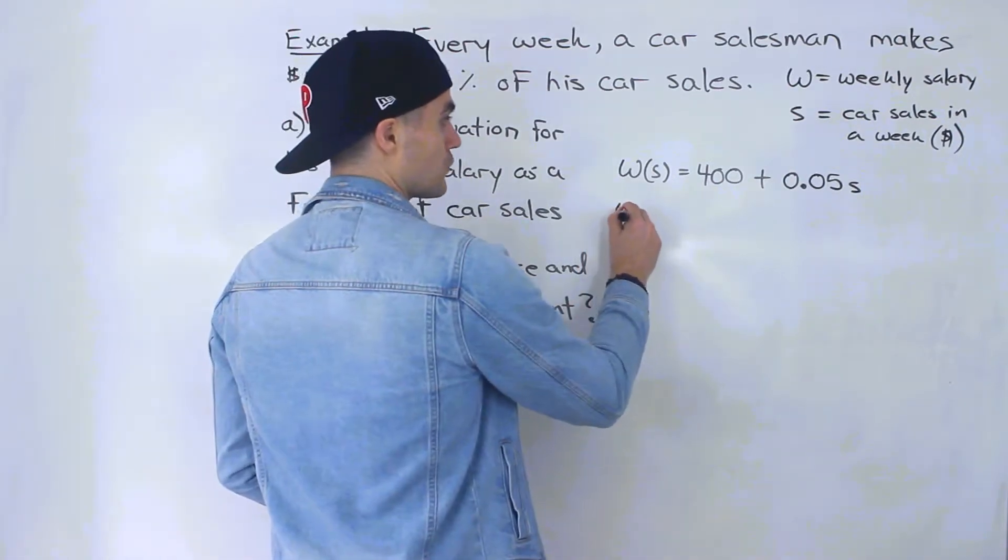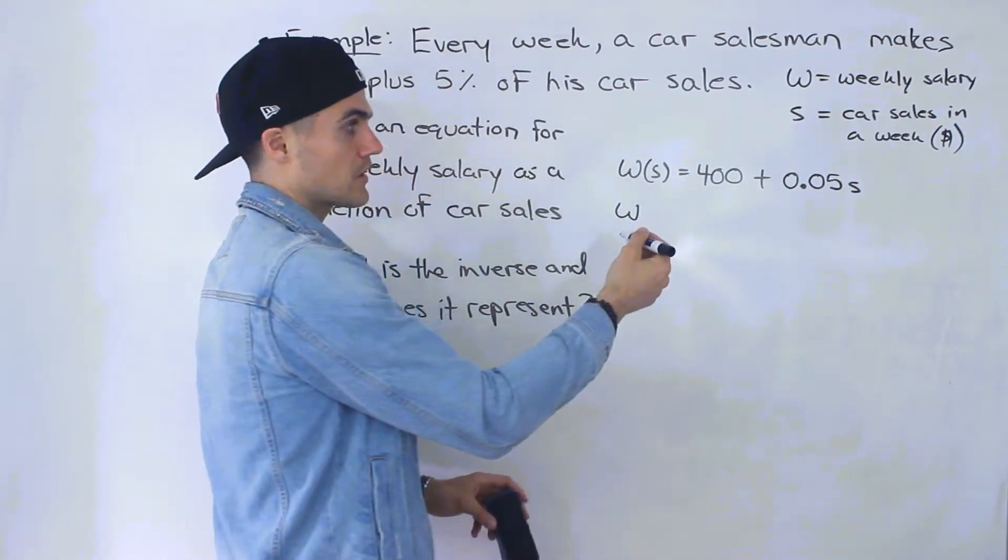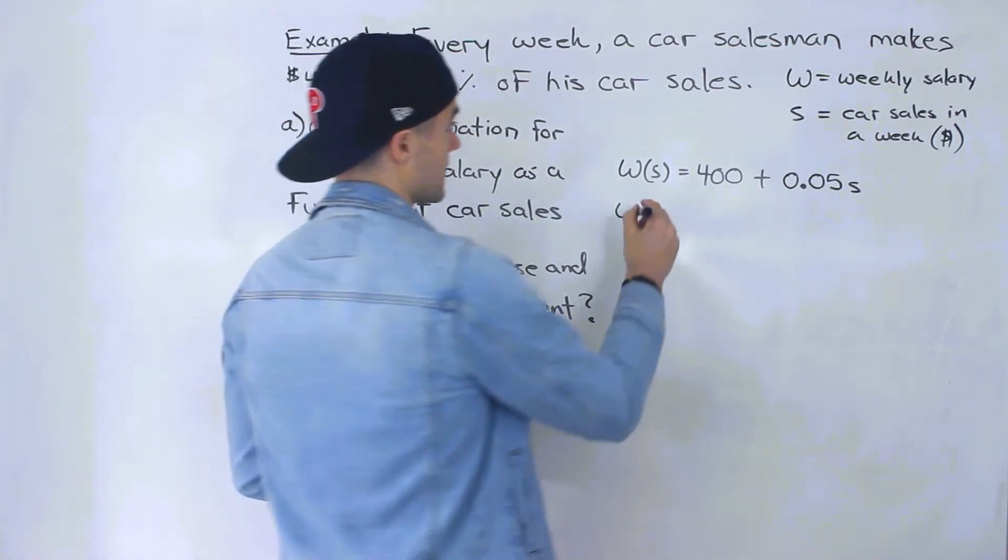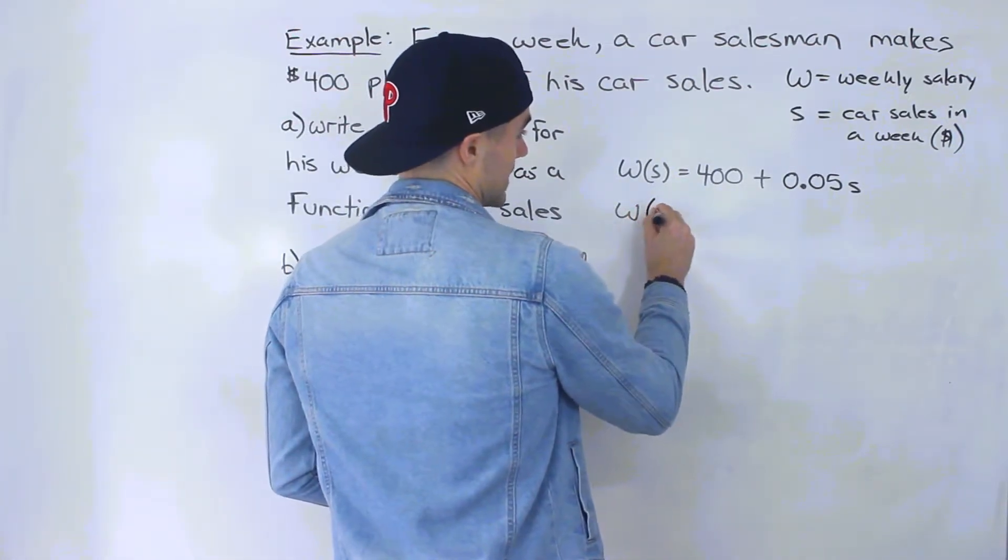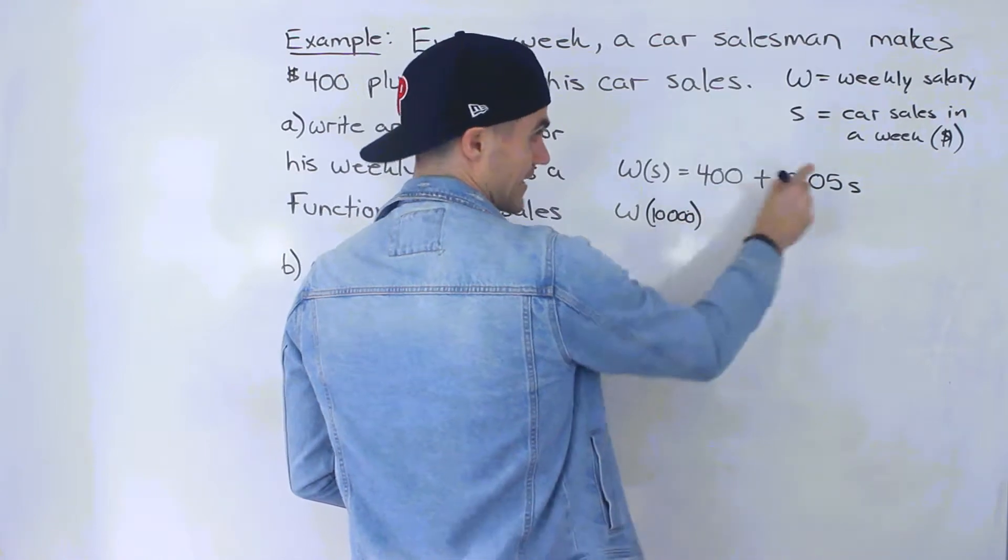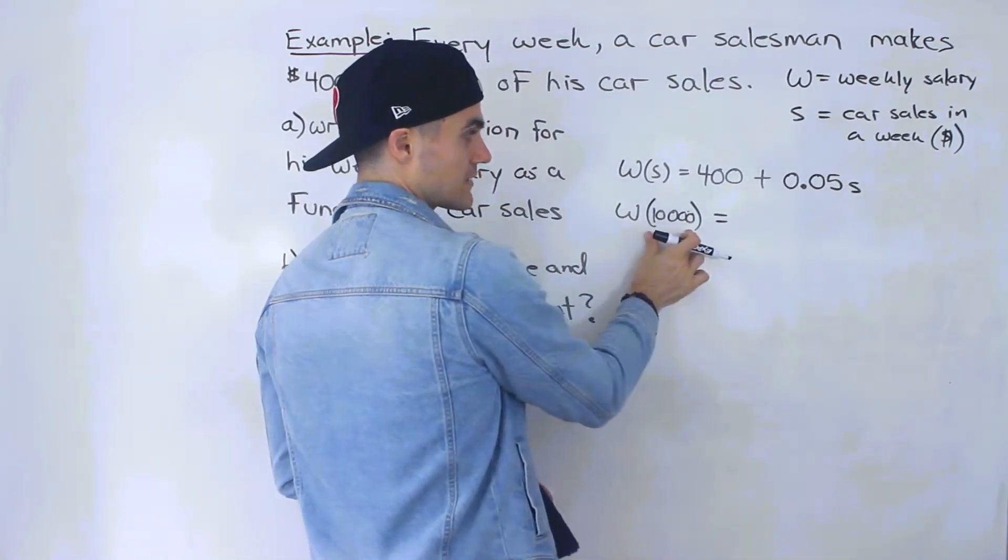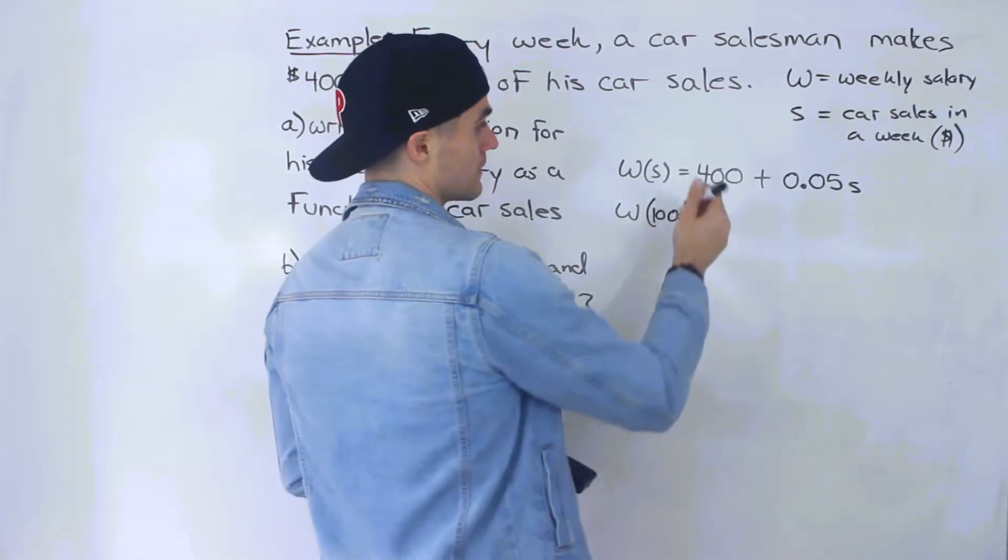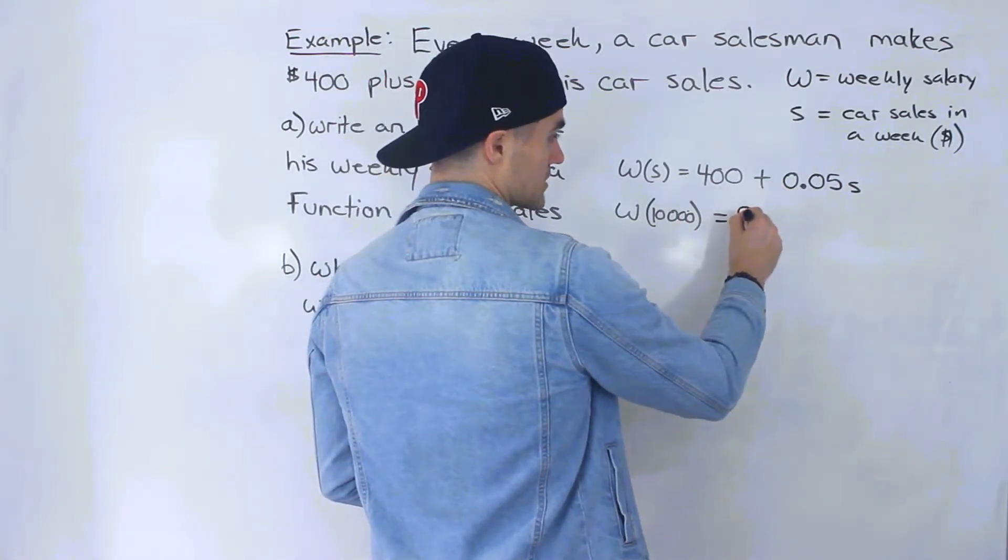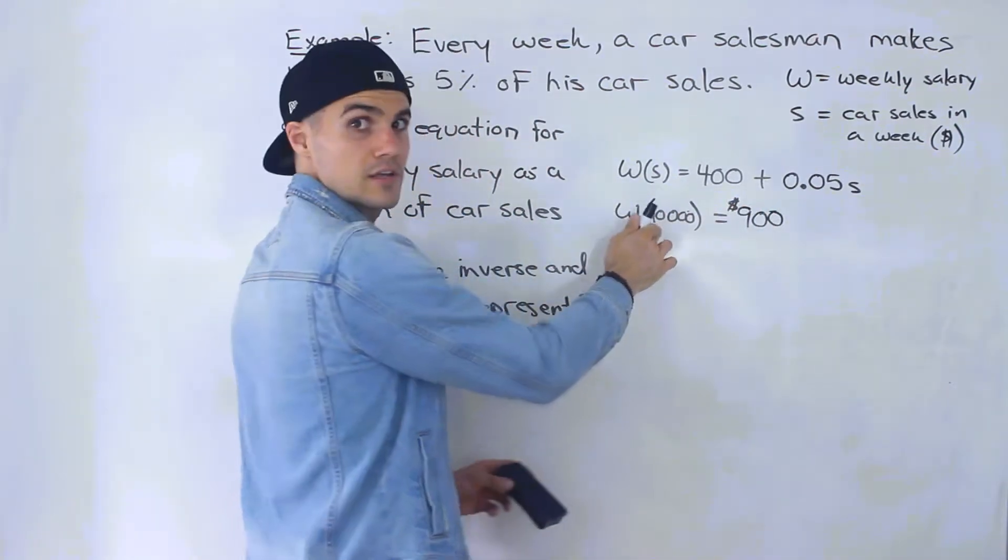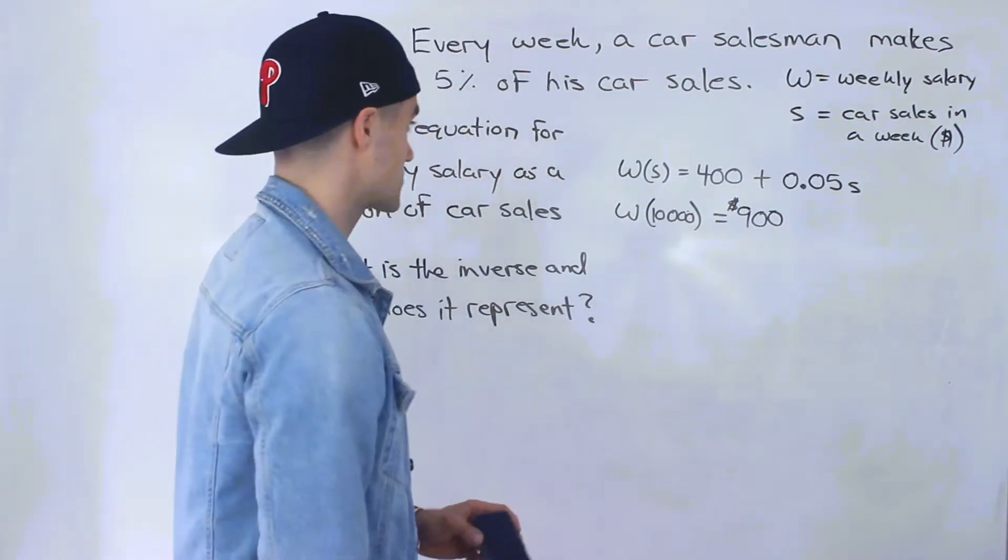So for example, if we wanted to know what's his weekly salary if he sold $10,000 worth of cars, then we would plug in $10,000 for S. And we'd end up with 400 plus 0.05 times 10,000 would give us 500. 400 plus 500 would give us 900. So he'd make $900 if he sold $10,000 worth of cars in a week.